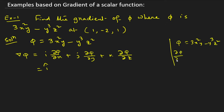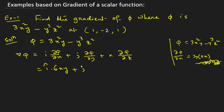What is ∂φ/∂x? When you differentiate with respect to x, y and z are constant. So 3y is constant, differentiate x² to get 2x. For the second term, there is no x, so it becomes 0. So ∂φ/∂x = 6xy.